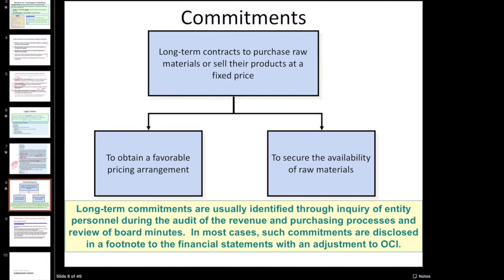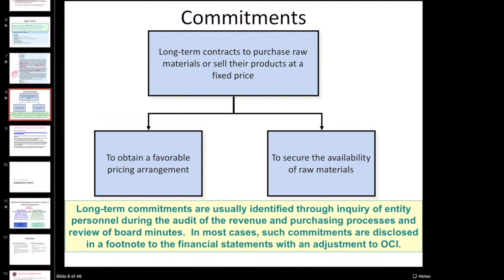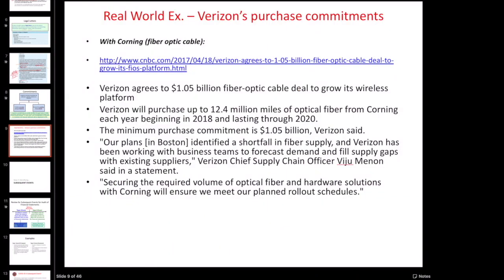Now for commitments - this is both commitments and contingencies. Commitments will be things like purchase commitments that the client has made. Companies might enter into these to potentially secure availability of raw materials long into the future, or to obtain favorable pricing over a few years. An example is Verizon entering into a purchase commitment with Corning, a maker of fiber optic cable, to help complete their 5G network.